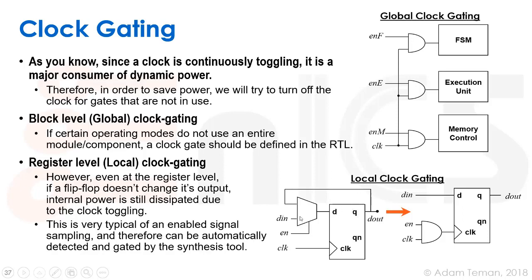If we remove this multiplexer and replace it with a clock gate — for example an AND gate — we can stick the enable into the AND gate, and the clock will only propagate to the flip-flop pin once enable is 1. Therefore, we save toggling on the clock net, this saves power inside the flop, and we can share this gate between different flip-flops. That's how we do local clock gating.